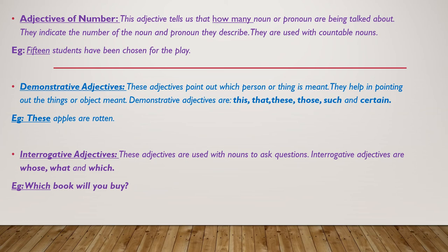Interrogative adjectives: when we studied the types of sentences, we studied about interrogative sentences. You all know that interrogative means question sentence. In the same manner, interrogative adjective means question adjective. These adjectives are used with nouns to ask questions. Interrogative adjectives are: whose, what, and which. For example: which book will you buy?